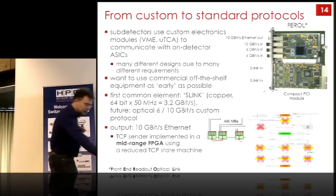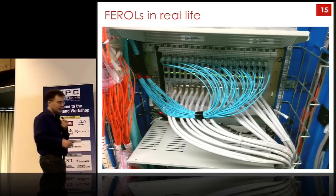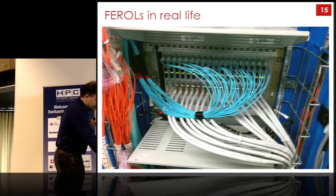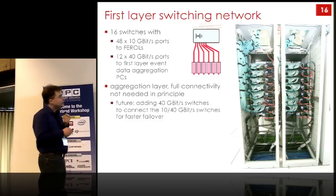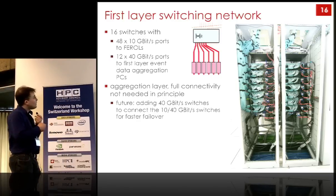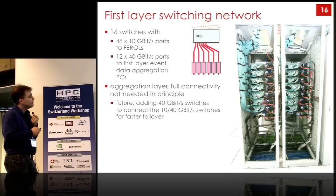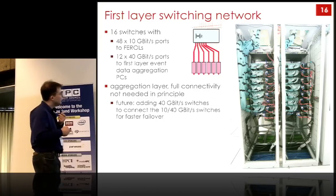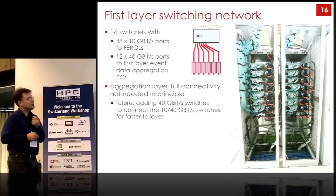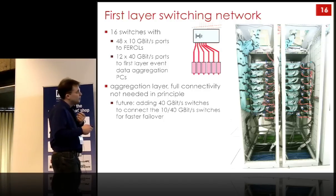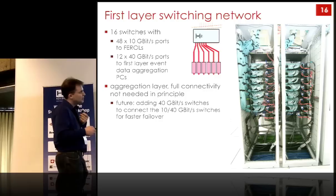This is how the modules look in practice — copper interconnects coming in and 10 gigabit fibres going out. This is just one crate of many. Then you go 100 metres to the surface where we have the first layer of the switching network: 16 switches with 10 gigabit input lines going out at 40 gigabit to the PCs. This is an aggregation layer doing partial assembly of collision data per collision. We're building a factory network connecting switches because if one PC fails at 3 o'clock in the morning, it's okay, but if multiple fail you may lack processing capacity on a switch, so you want to be able to send data to another switch.